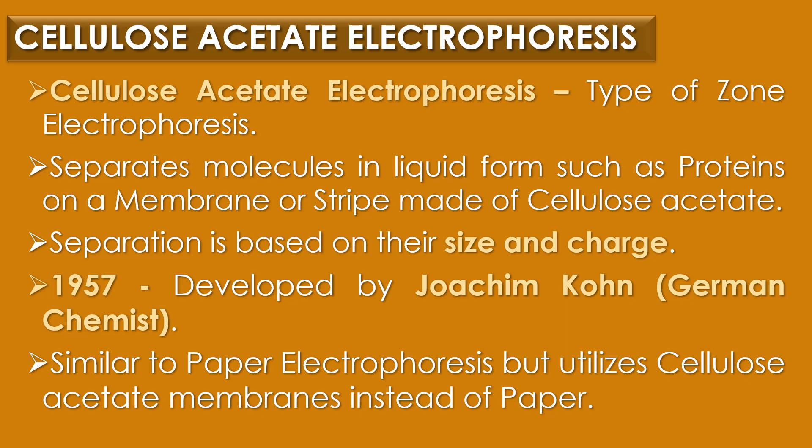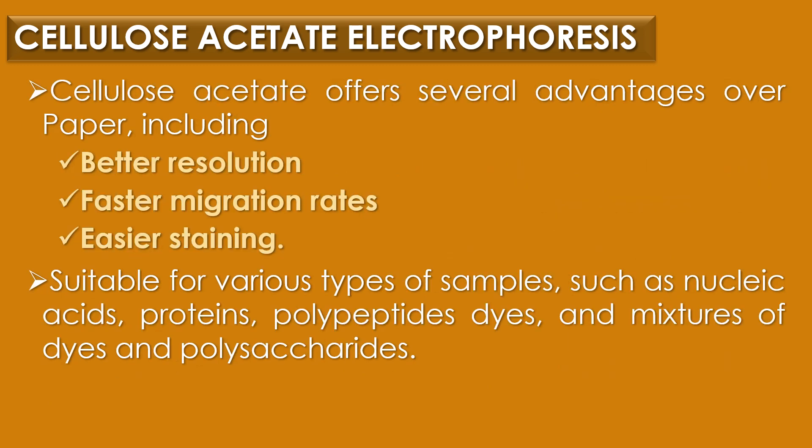Cellulose acetate electrophoresis is similar to paper electrophoresis but utilizes cellulose acetate membranes instead of paper. Cellulose acetate offers several advantages over paper, including better resolution, faster migration rates, and easier staining. It is suitable for various types of samples such as nucleic acids, proteins, polypeptides, dyes, and polysaccharides.